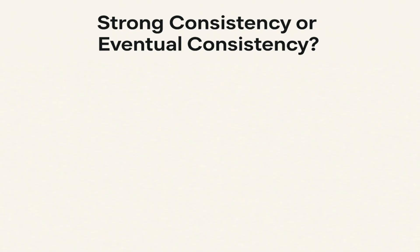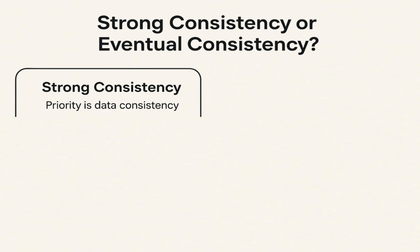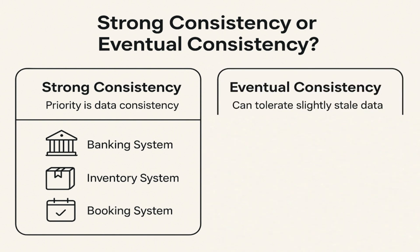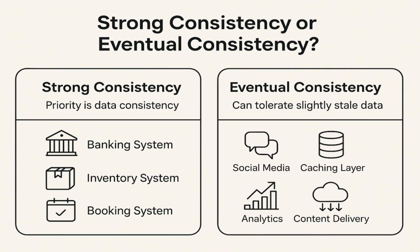So the big question is: what should we choose while designing our system — strong consistency or eventual consistency? There is no best solution. The correct choice depends on your business needs. If your priority is data consistency, meaning all users must see the most up-to-date data, then use strong consistency. It is very common in banking systems, inventory management, or booking systems. It will ensure the correctness of data, but it may increase latency and reduce availability. But if your system can tolerate slightly stale data in favor of better performance, scalability, and availability, then you should go for eventual consistency. It is ideal for social media, caching layers, analytics, and content delivery systems.